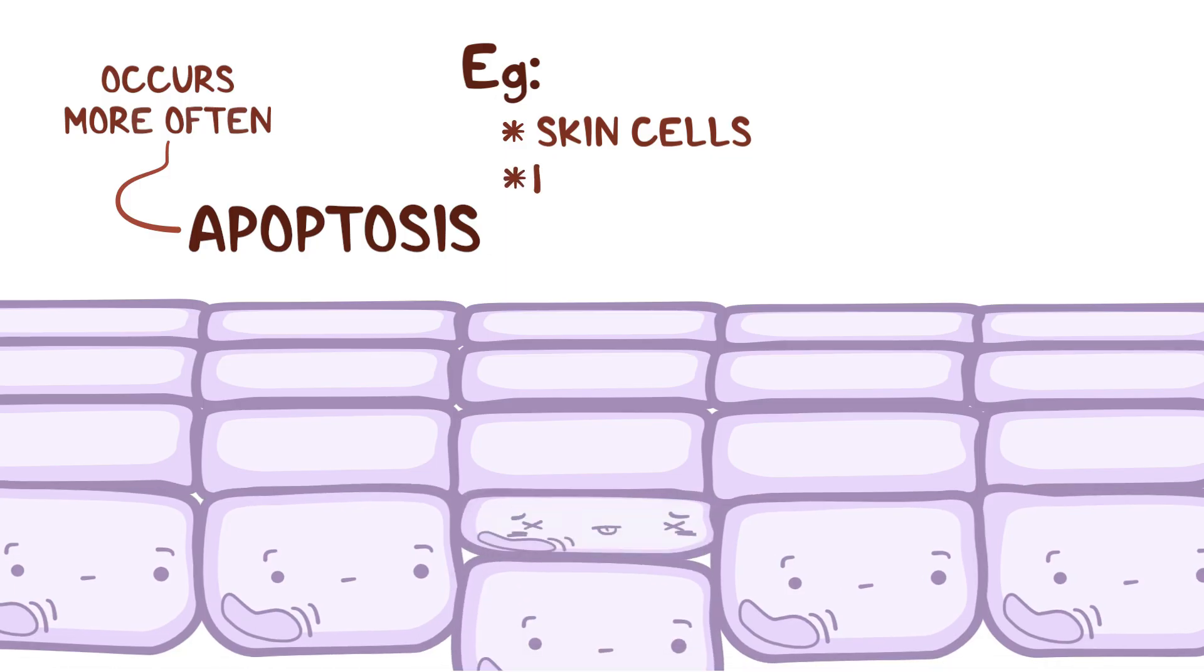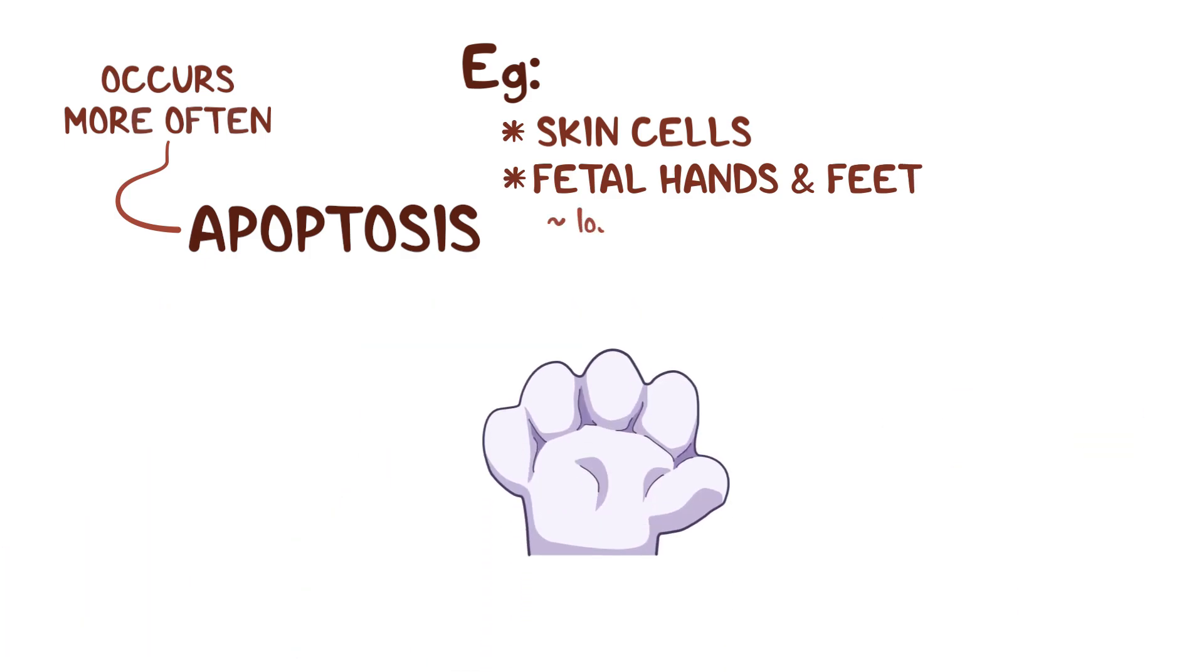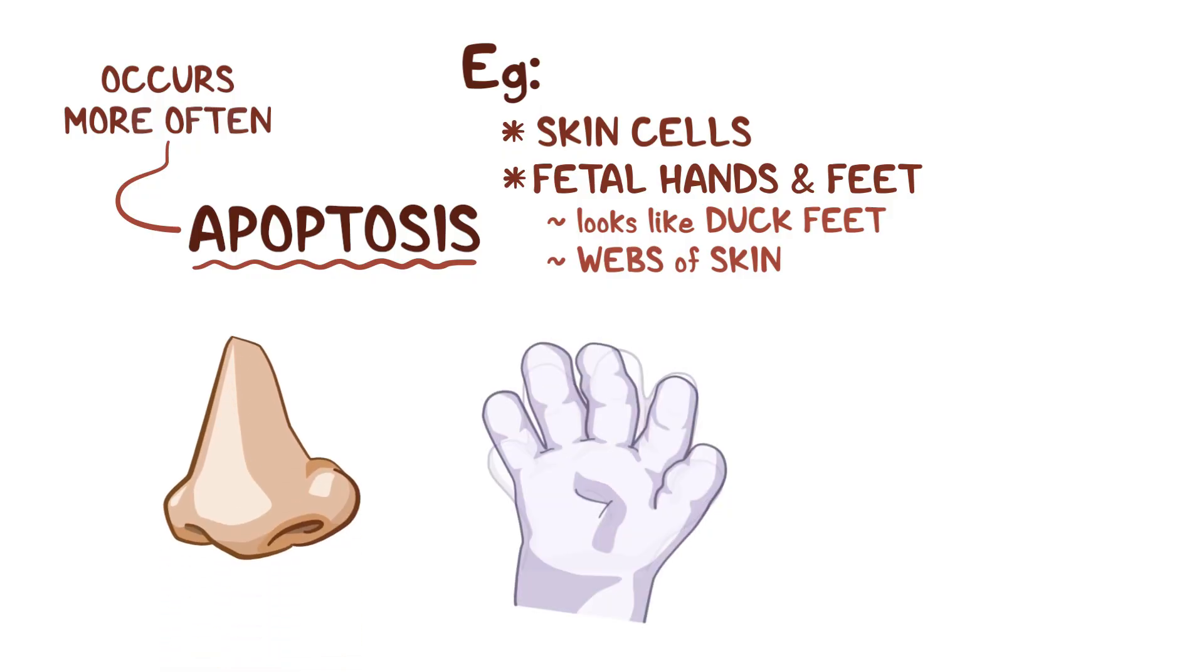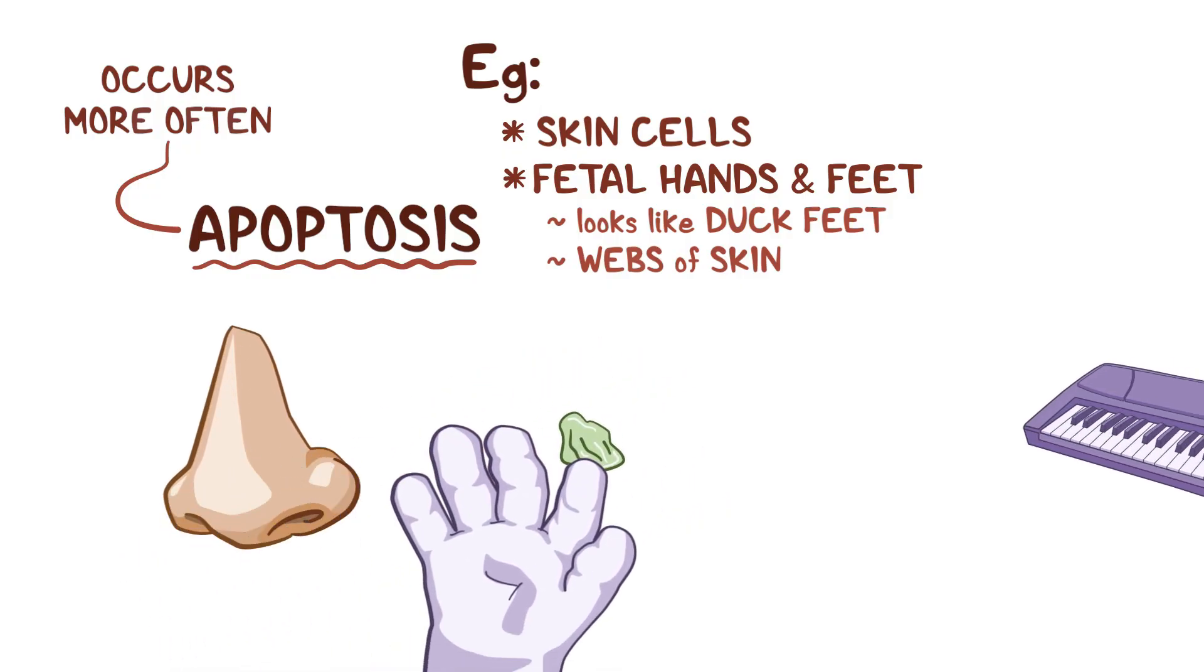Another example is in our hands and feet during fetal development. Initially, human hands and feet look like duck's feet, with webs of skin connecting the fingers. But the cells in the webbing undergo apoptosis, and that allows us to form individual digits that allow us to pick our nose and play the piano.